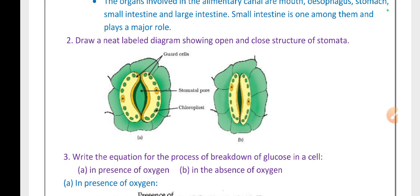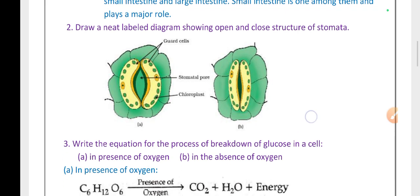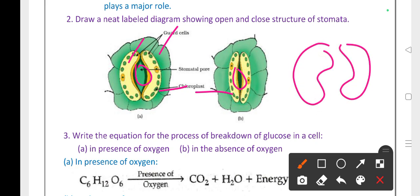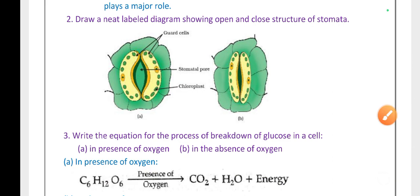Draw a neat labelled diagram showing the open and closed structure of stomata. This is frequently asked in exams. The guard cells control the stomata. The green tiny structures are called chloroplasts. If the guard cells are open, it is called an open stomata. If the guard cells are closed, it is called a closed stomata.